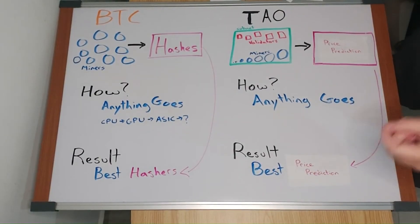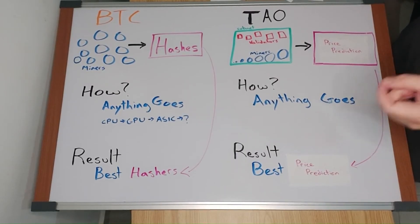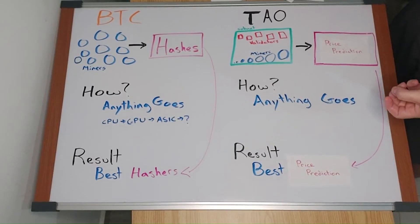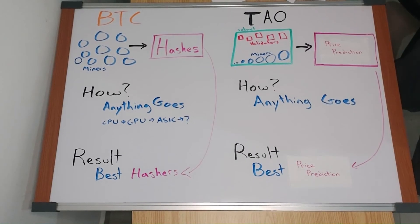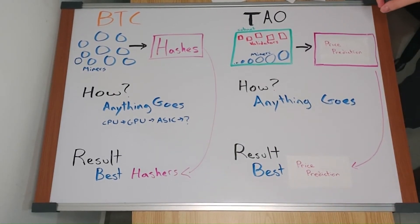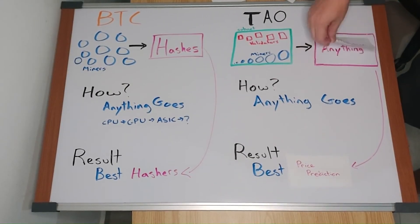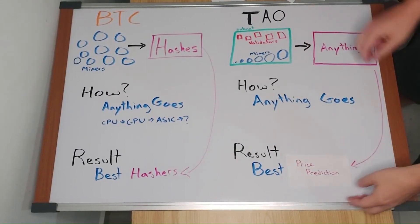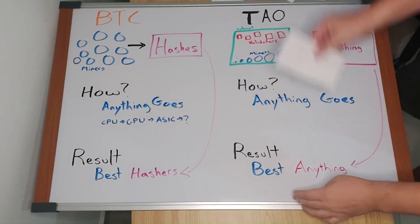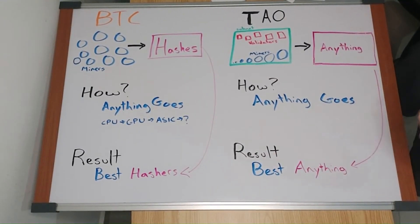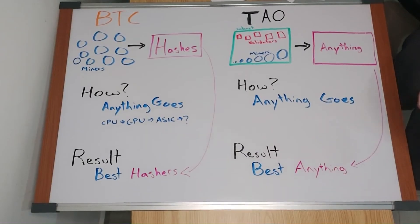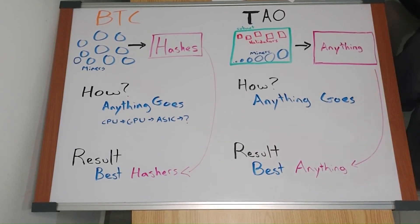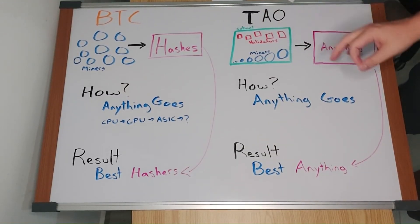It is producing an incentive to determine future prices better than any single centralized entity. BitTensor expands the type of work that miners can do. It expands it to anything that can be verified by code. It also does this work better than any centralized entity can, in the same way that Bitcoin solves hashes better than any centralized entity.